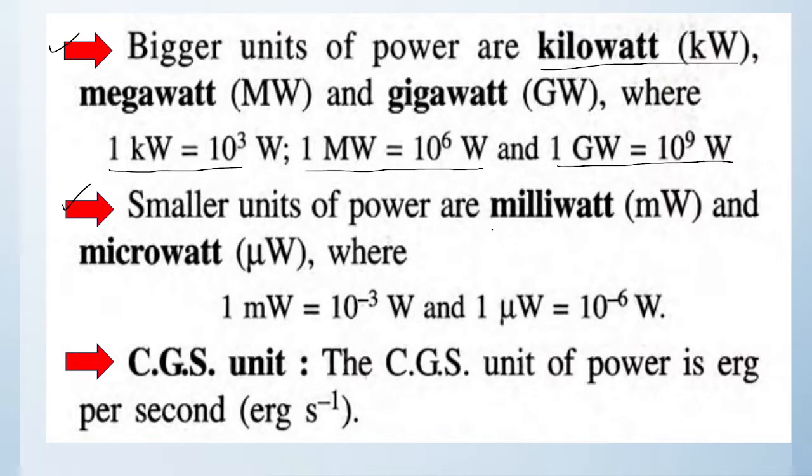1 milliwatt = 10⁻³ watts and 1 microwatt = 10⁻⁶ watts. The watch cells and small batteries produce energy in milliwatts and microwatts. In the CGS system, power is represented in ergs per second. These are the units of power that we use.